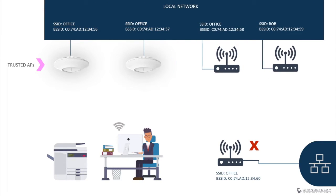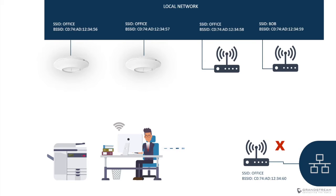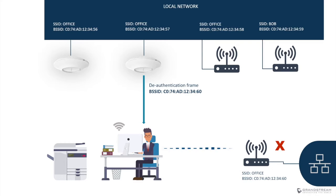If by mistake an access point is flagged as a rogue AP, you simply add it to the list of trusted APs. If there is an AP confirmed to be a rogue AP, you add it to the untrusted AP list. With the countermeasure option enabled, when a GWN access point detects a wireless client trying to associate with a rogue AP, it will send a deauthentication frame to force it to disconnect. To make the deauthentication frame look like it came from the rogue AP, the GWN access point will spoof the MAC address of the rogue AP.